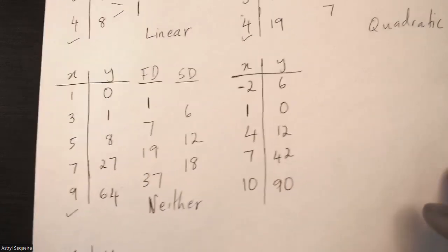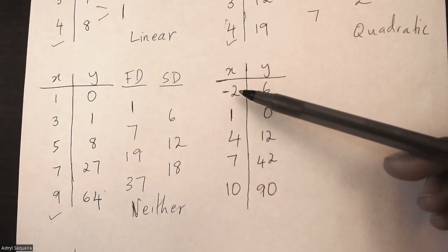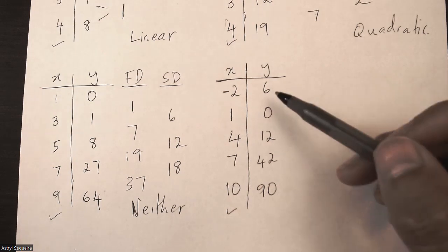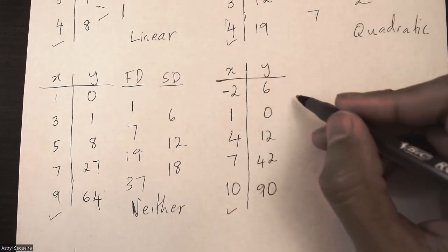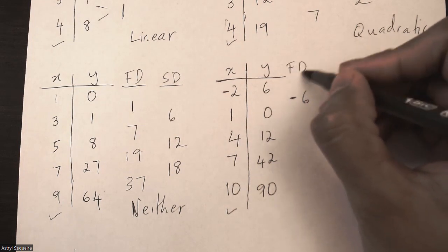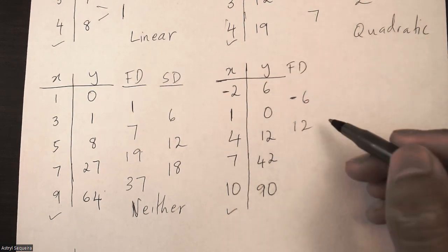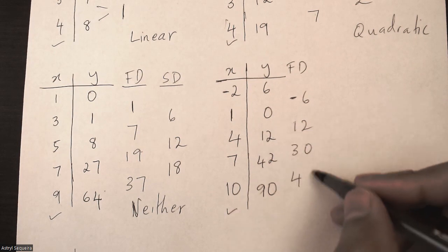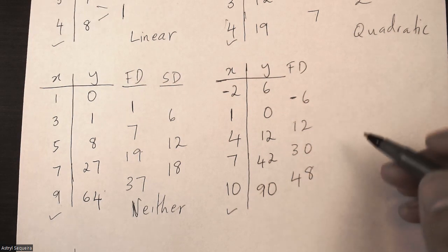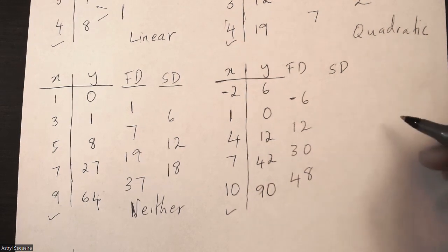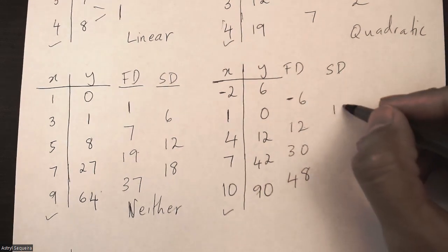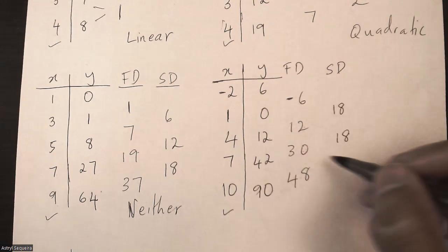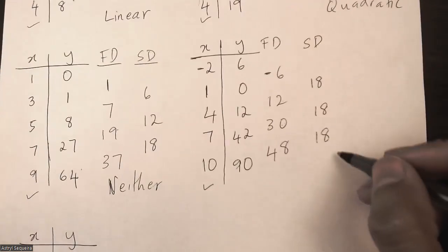For the fourth table, x values all increase by 3, so our check is good. First differences: 0 minus 6 is negative 6, 12 minus 0 is 12, 42 minus 12 is 30, 90 minus 42 is 48 — not the same, so definitely not linear. Second differences: 12 minus negative 6 is 18, 30 minus 12 is 18, 48 minus 30 is 18. All the same, so this equation is quadratic.